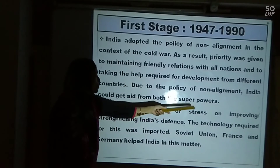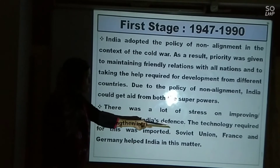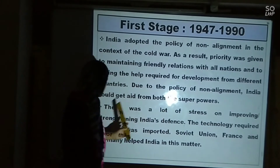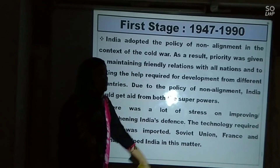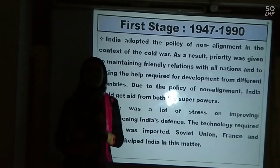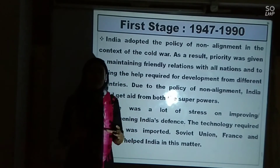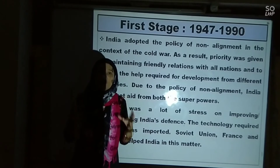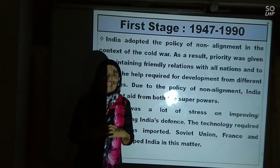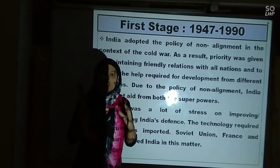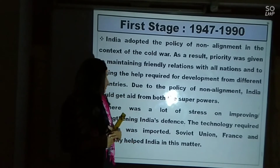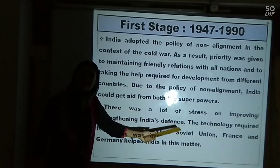There was a lot of stress on improving and strengthening India's defense. The technology required for this was important, and the Soviet Union, France, and Germany helped India in this matter, so that India's defense system could improve and become powerful and India's independence and sovereignty could be safeguarded.